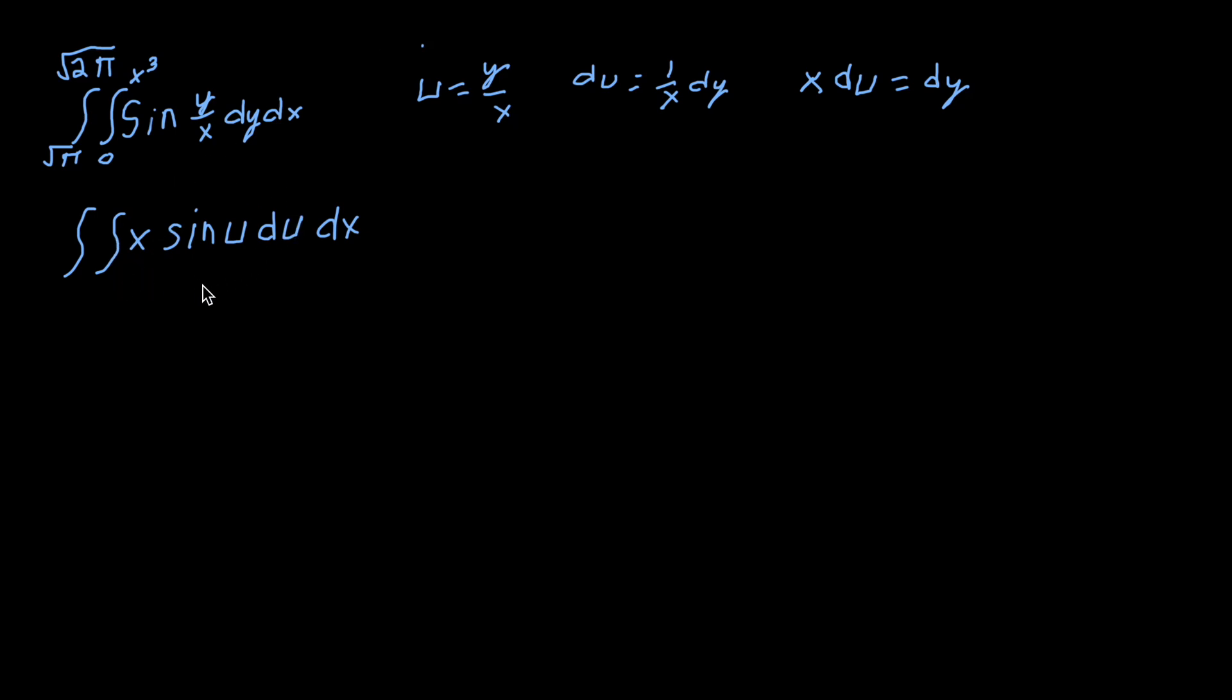We'll now solve this inside integral for du. So the x is constant, so that remains the same. The integral of sine u will be negative cosine u. And we're done with the u substitution, so we could plug back in our y and x. And that's the integral from x cubed and 0.